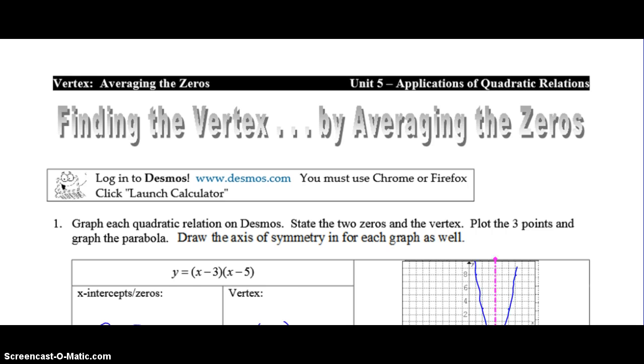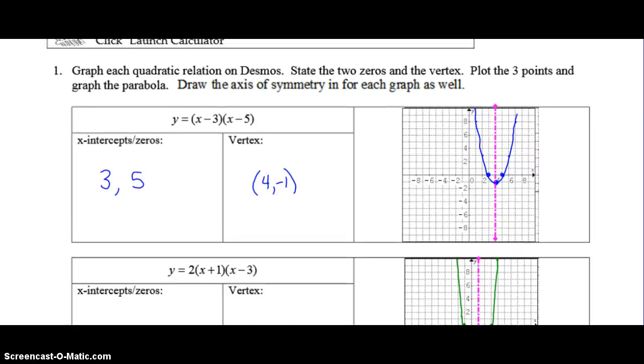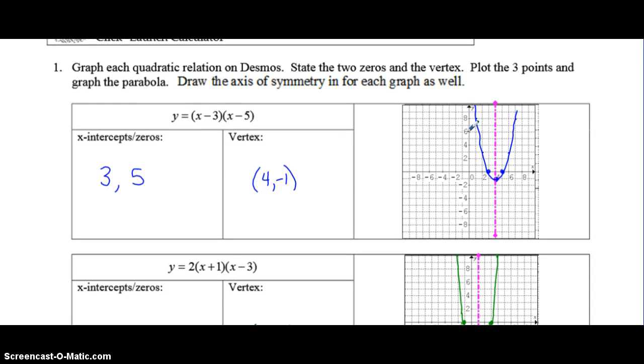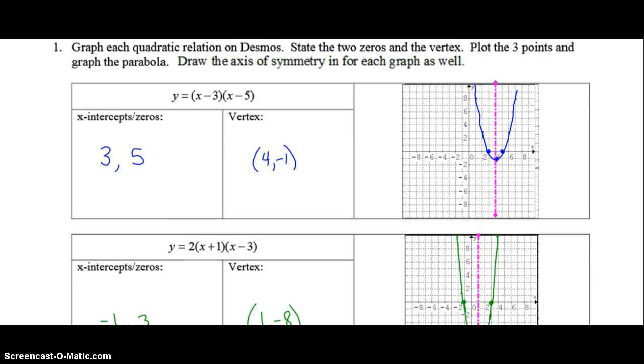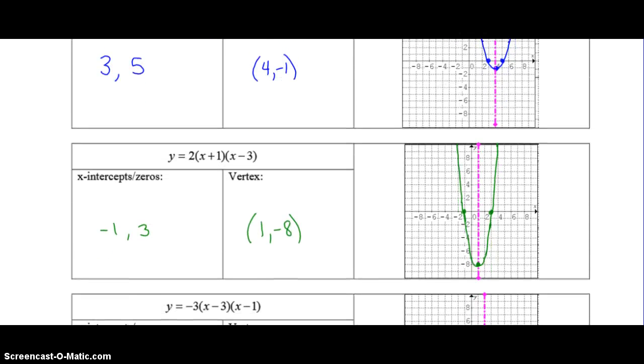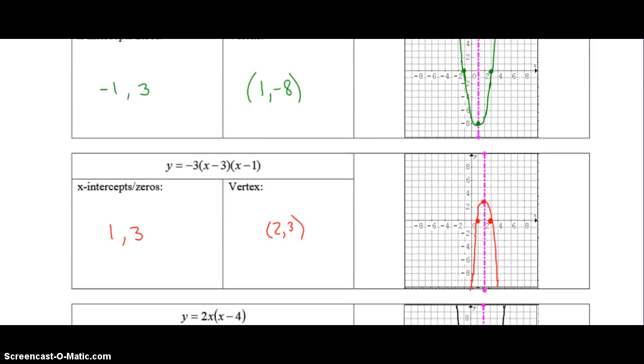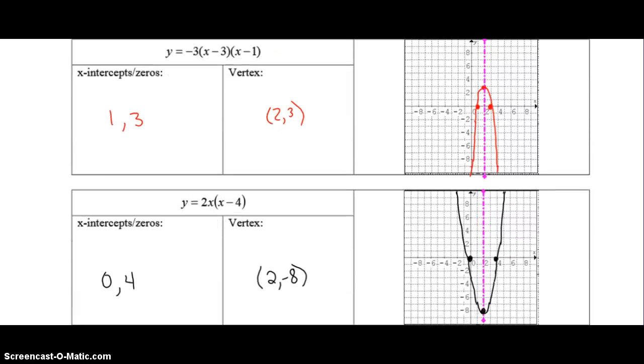Okay so let's check your answers to the Desmos work. Here is question number one. You had to graph the parabola using Desmos, determine the x-intercepts and the vertex on Desmos and plot those onto the graph on here. You can check it for the second one, the third one, and lastly the fourth one.